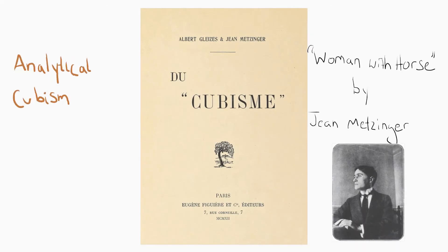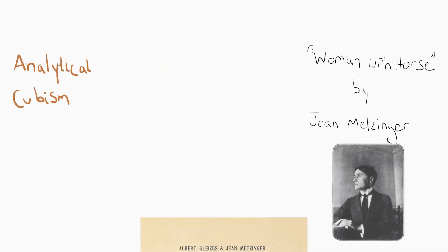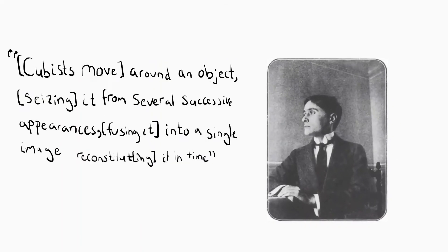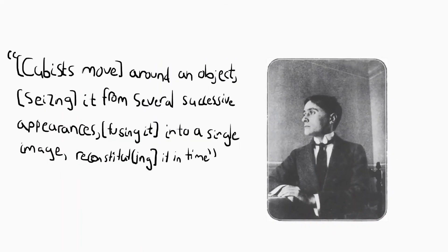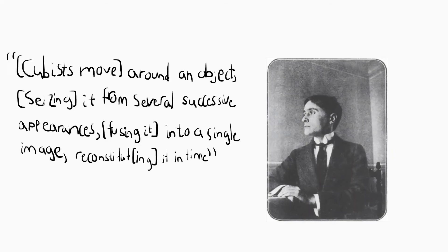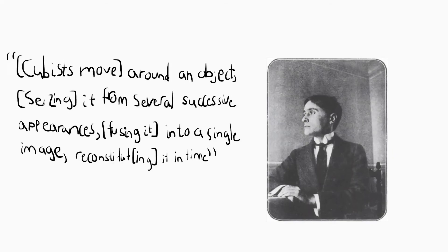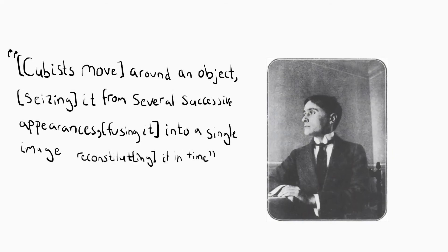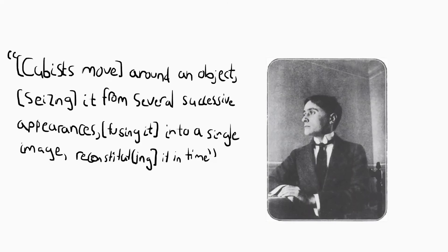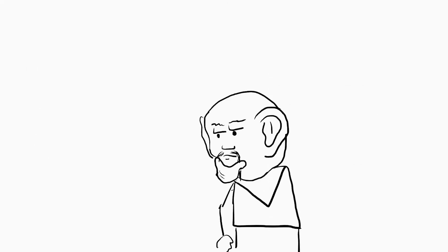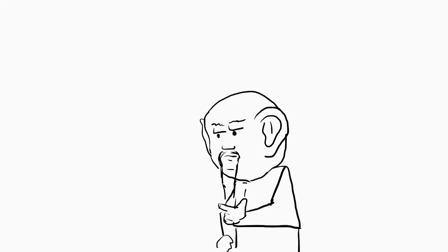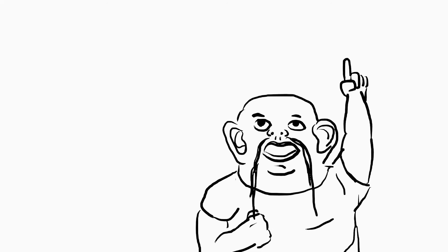One major characteristic of analytical cubism is the inclusion of multiple viewing perspectives being present simultaneously in the same painting. Metzinger even describes this aspect of cubism in Du Cubisme, a book he helped write in 1911. Cubists move around an object, seizing it from several successive appearances, fusing it into a single image, reconstituting it in time. If the idea of having multiple states being present in something at the same time sounds a whole lot like Bohr's complementarity, you'd be right.